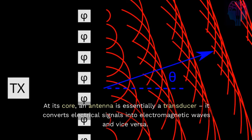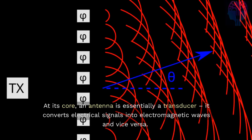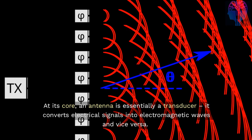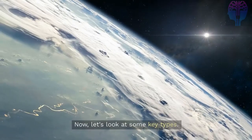At its core, an antenna is essentially a transducer. It converts electrical signals into electromagnetic waves and vice versa. Now, let's look at some key types.